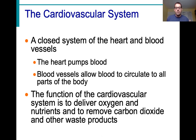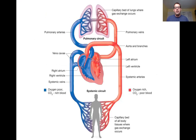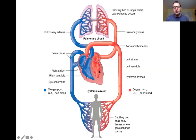Your heart is responsible for pumping blood, and those blood vessels allow your blood to circulate to all parts of the body. The function of the cardiovascular system is to deliver oxygen and nutrients and to remove carbon dioxide and other waste products. The right side of the heart pumps blood that has picked up waste and CO2 to the lungs — the pulmonary circuit. The left side takes oxygenated blood from the lungs and pumps it out to all body systems — the systemic circuit.